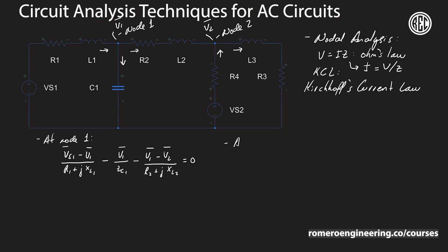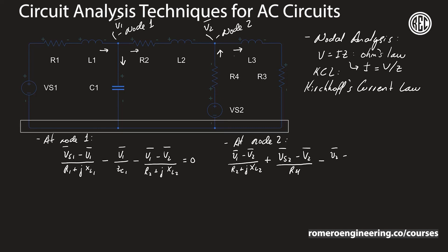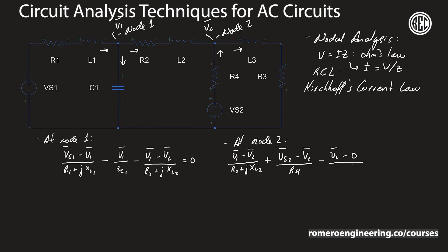At node two, I have a current entering from the left: V1 minus V2 divided by R2 plus j times X sub L2. Another current enters from the middle: VS2 minus V2 divided by R4. Then a current leaves on the right: V2 minus zero divided by R3 plus j times X sub L3. All of that equals zero.